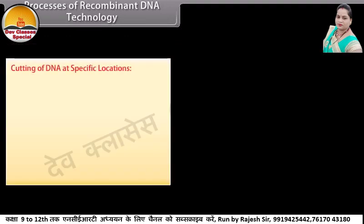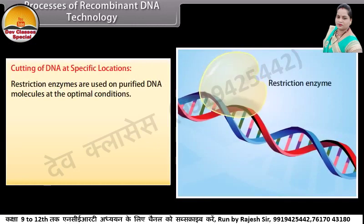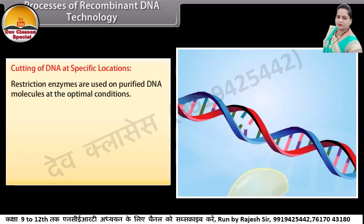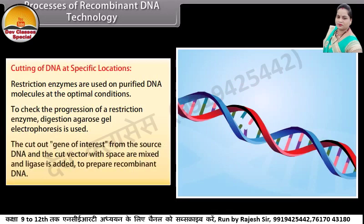Cutting of DNA at specific locations: restriction enzymes are used on purified DNA molecules under optimal conditions. To check the progression of a restriction enzyme digestion, agarose gel electrophoresis is used. The cut-out gene of interest from the source DNA and the cut vector with space are mixed and ligase is added to prepare recombinant DNA.